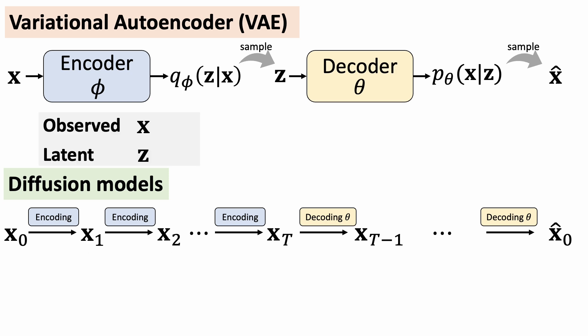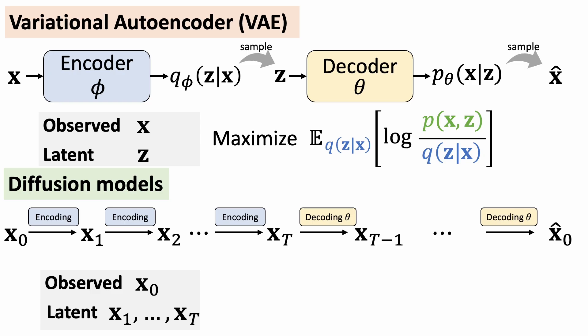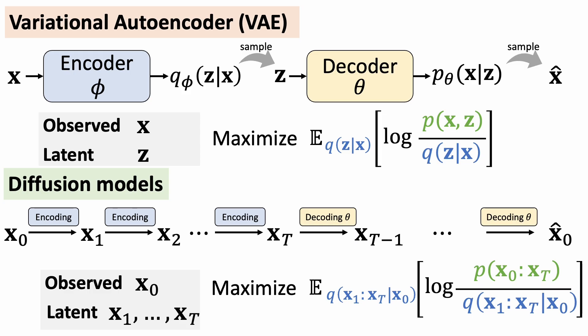In VAE, we have observed variable x and latent variable z. Similarly, in diffusion models, we call the clean image x0 and latent x1 to xT. We can train a diffusion model in the same way as we train a VAE by maximizing the evidence lower bound.